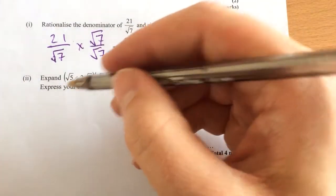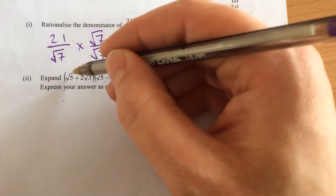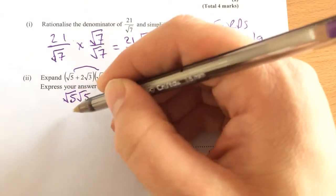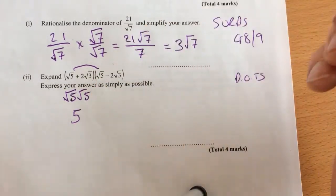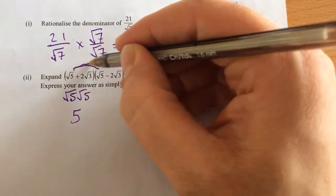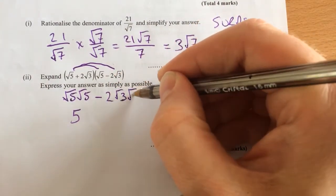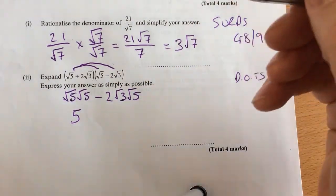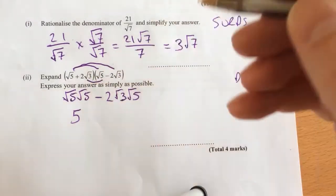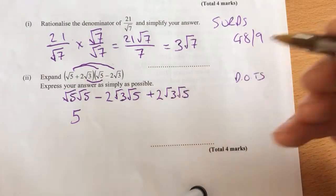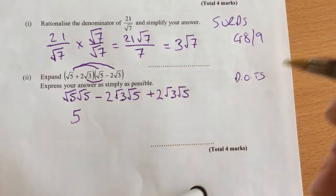So we're going to expand them. What's our first term? Times the root 5 in this bracket by the root 5 in the other. So you get root 5 root 5, which is just the same as 5. So that'll simplify to 5. And then times that root 5 by minus 2 root 3, which gives you minus 2 root 3 root 5. Okay, and then you've got the next term in the first bracket, which is the plus 2 root 3 times by root 5 gives you plus 2 root 3 root 5.